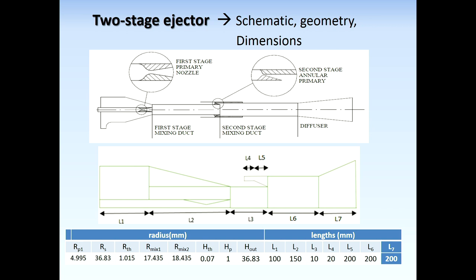Here is a schematic of the two-stage ejector showing the geometry that was modeled. The dimensions — lengths and radii — are provided in a table, and the connection parts between the different sections of the two-stage ejector are visible in the figure.